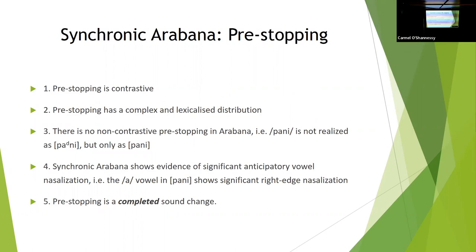So synchronic Arabana, pre-stopping is contrastive in Arabana. It has a complex and quite lexicalised distribution. There's no phonological or morphological criteria on which you can predict the distribution of pre-stopping synchronically in Arabana. There's no non-contrastive pre-stopping in Arabana. So forms that would potentially historically have shown pre-stopping do not show pre-stopping synchronically in Arabana. So puni has no alternate realisation synchronically in Arabana. And there's significant evidence of anticipatory nasalisation synchronically in Arabana. So in a form like puni, there's considerable evidence for right edge nasalisation. So overall, it's quite clear that pre-stopping is a completed sound change in Arabana and was completed before any of the speakers that we know about acquired Arabana.